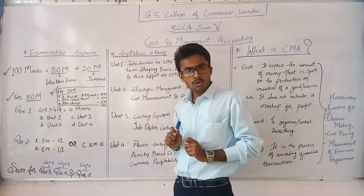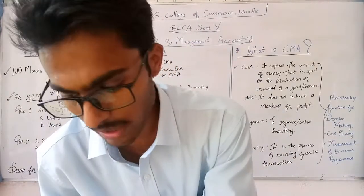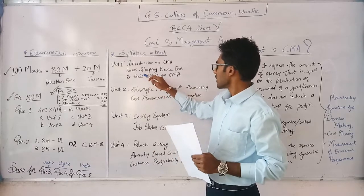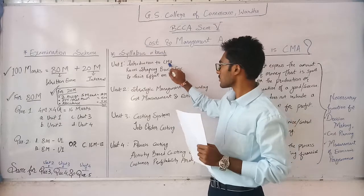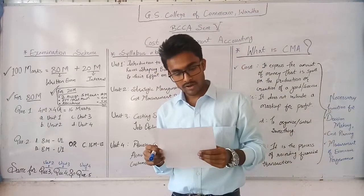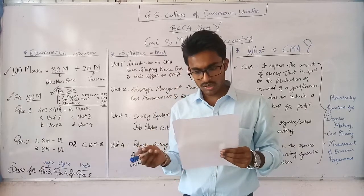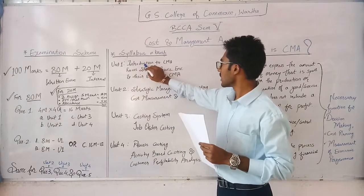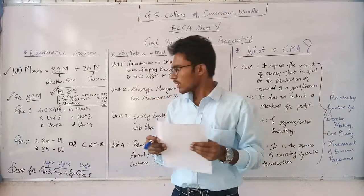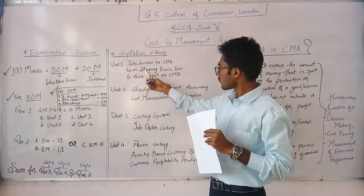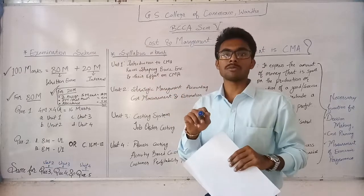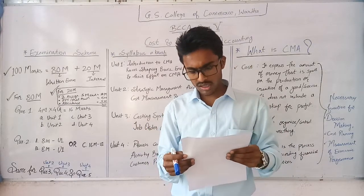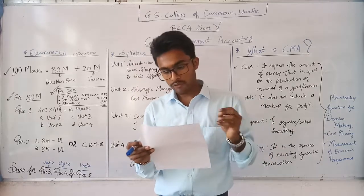Now we will see how the syllabus has been structured. Let us discuss the syllabus in brief. There are 4 units in total. Unit 1 covers Introduction to CMA, i.e., Cost and Management Accounting, including accounting frameworks, taxonomy, meaning of Cost Accounting and Cost and Management Accounting, and Dimensions of Management Accounting. The second topic in Unit 1 discusses forces shaping the business environment and their effect on Cost and Management Accounting, including trends and the role and profession of cost and management accountants.